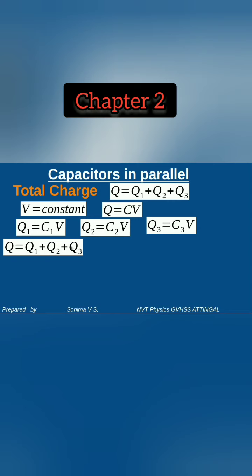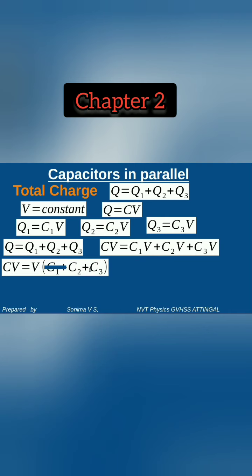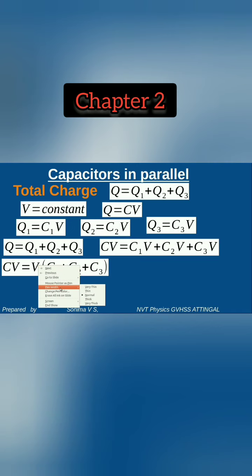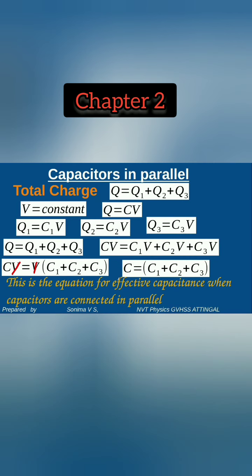Total charge Q is equal to Q1 plus Q2 plus Q3. Substituting, Q equals CV, so CV equals C1V plus C2V plus C3V. The V terms cancel and we get C equals C1 plus C2 plus C3. This is the equation for effective capacitance when capacitors are connected in parallel.